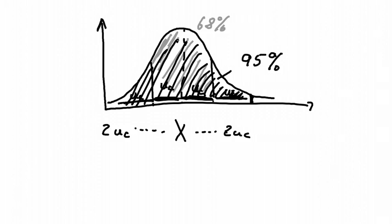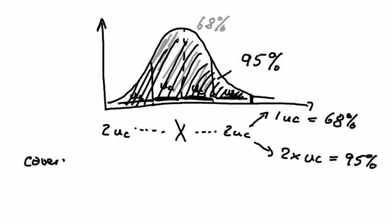So what we can do is we just simply multiply our combined uncertainties. So one uncertainty would give us 68%. But if we double or roughly double the uc, this would give us 95% of our uncertainties. And this is actually what we can do.